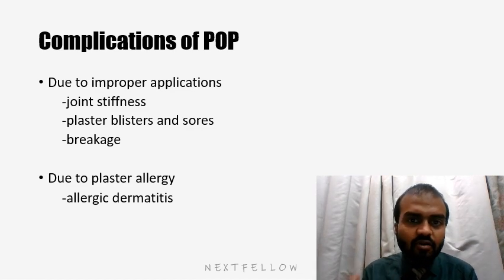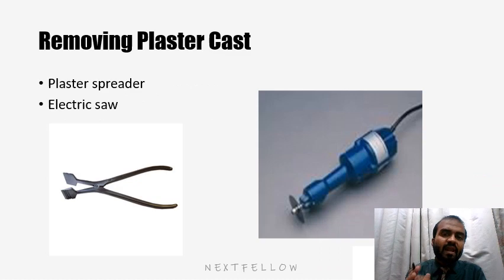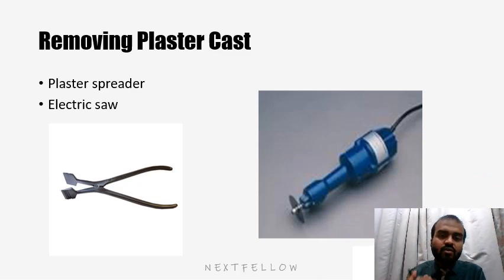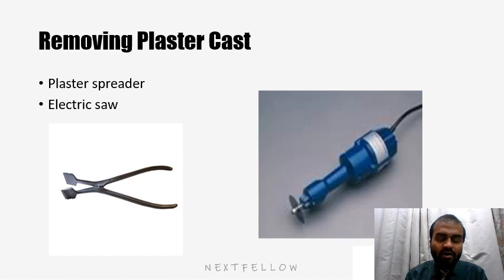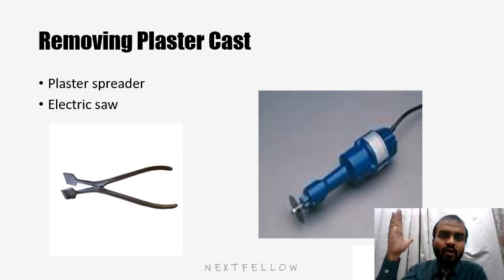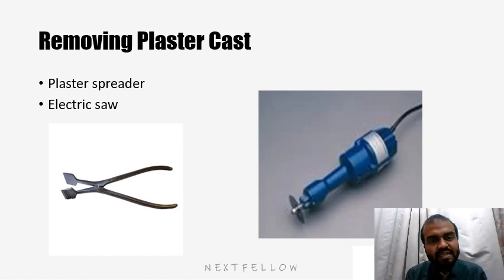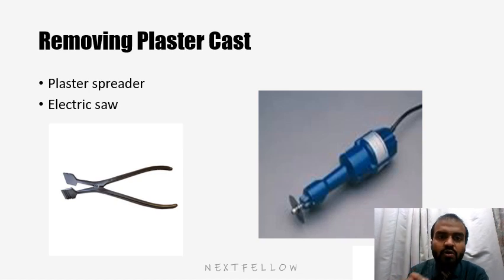To remove a plaster cast, one needs a good plaster spreader and an electric saw. Using the electric saw, a cut is made longitudinally over the plaster cast, and using the spreader, the edges are spread apart. After that, using some pressure, it is removed. One also needs a sharp good blade to cut through the padding.